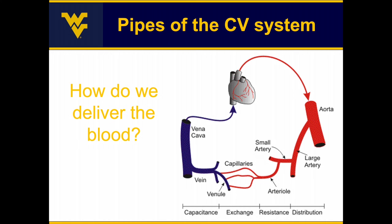Blood is delivered through vessels like pipes. We have a large artery known as the aorta leaving the heart, moving into larger arteries, then smaller arteries, then arterioles, and then into capillaries that allow for the exchange of nutrients and gases. Waste products are picked up at the capillaries and moved into venules, back into veins, and back to the right side of the heart via the vena cava. These vessels deliver oxygen, and for this lecture we will focus on their role as conduits.